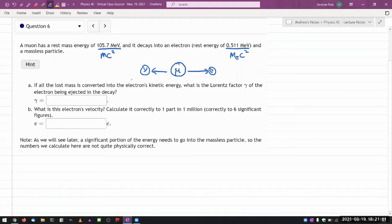And the question asks, if all the lost mass is converted into the electron's kinetic energy, what is the Lorentz factor gamma of the electron being ejected in the decay? So since the question is telling us to make this assumption, we can make that assumption and go through the calculation. And I will spend some time at the end talking about this question to point out how the assumption we are making is not physical. And there's a reason I'm drawing the direction of this massless particle as going the other way as the electron.